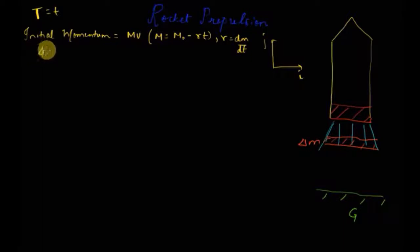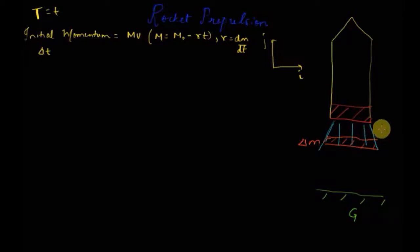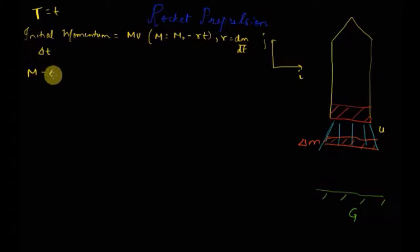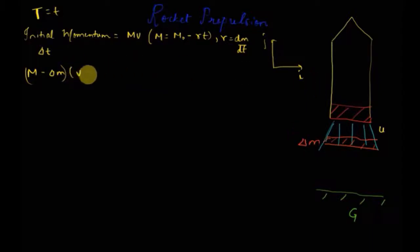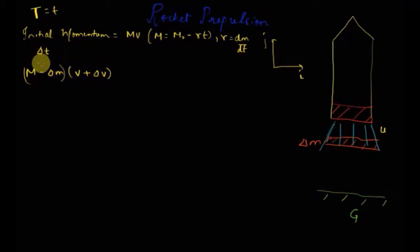Now, after a time interval of delta t, delta m amount of gases get ejected from the rocket. These gases get ejected in the downward direction at a velocity of u with respect to the rocket. After the time interval delta t, the remaining mass of the rocket is given by capital M minus delta m. In this process, the velocity of the rocket increases by delta v, so the momentum of the remaining mass is (M − δm)(v + δv).